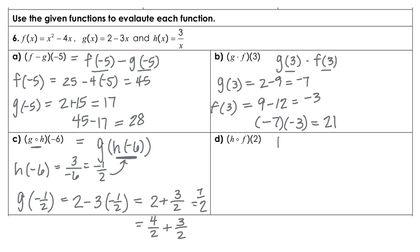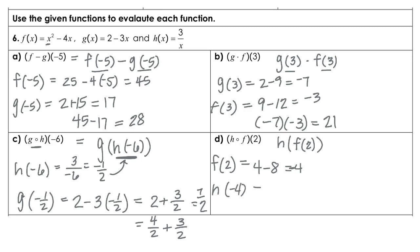For part d, we have h of f at 2. First we need to find f at 2, which is 4 minus 8, giving us negative 4. Then we go back and we need h at negative 4, so that's going to be 3 over negative 4, or negative 3 fourths.